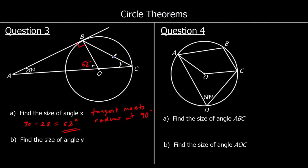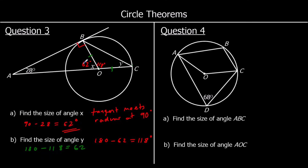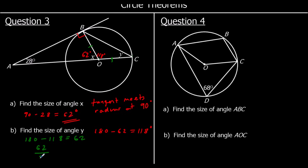To find y: angles in a straight line add up to 180, so 180 − 62 = 118 degrees. We also have an isosceles triangle because OC and OB are both radii going from the center to the circumference. The angles at the base of the isosceles triangle are equal: 180 − 118 = 62, and half of 62 is 31 degrees. So y is 31 degrees.